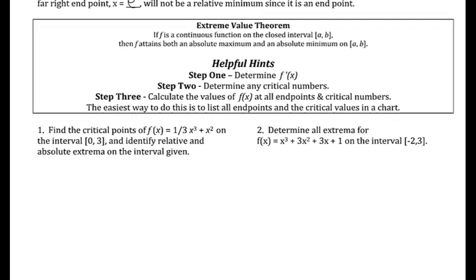The extreme value theorem says: if you have a continuous function on a closed interval, then you have an absolute max and an absolute min. That's common sense — if a function between two values is continuous, one of them has to be the highest point and one has to be the lowest. The job of the extreme value theorem is to help you find those extremes — the absolute max and absolute min.